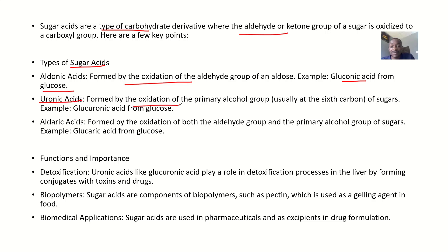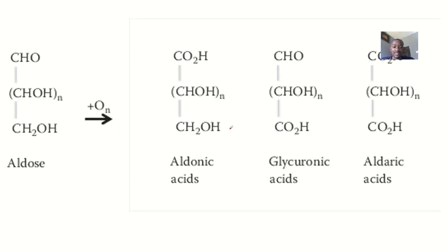Then we have uronic acids — these are formed by oxidation of the primary alcohol group, usually on the sixth carbon of sugars. Examples include glucuronic acid from glucose. Then we have aldaric acids — these are formed by oxidation of both the aldehyde group and the primary alcohol of sugars. Examples include glucaric acid from glucose.